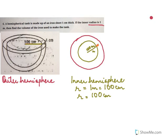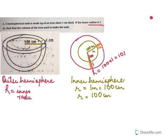The thickness is 1 centimeter. So the outer radius R will be the inner radius plus the thickness: R = 100 + 1 = 101 centimeters. So the outer R is 101 centimeters.